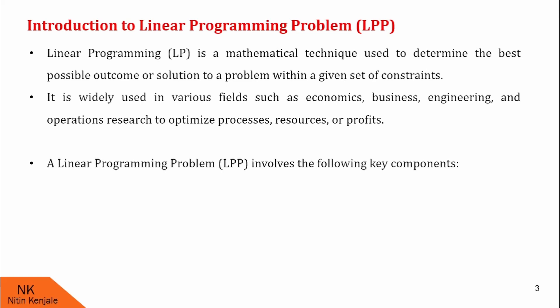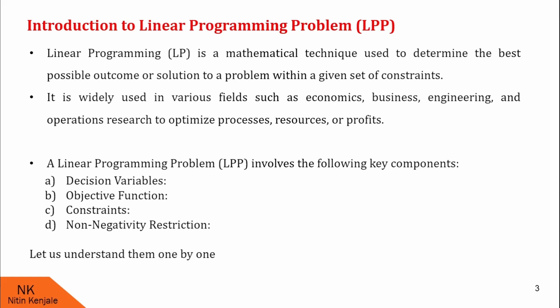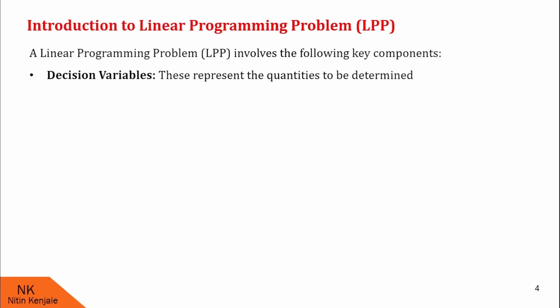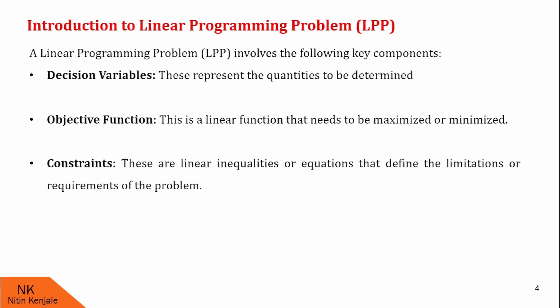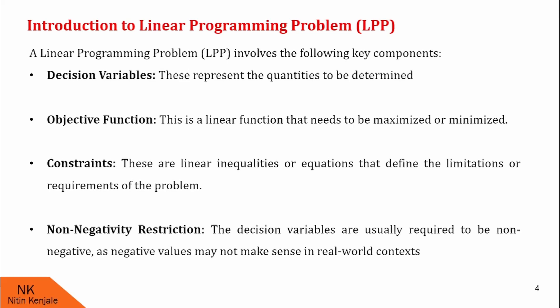A linear programming problem involves the following key components: decision variables, objective functions, constraints, and non-negative restrictions. Decision variables represent the quantities to be determined. The objective function is a linear function that needs to be maximized or minimized. Constraints are the linear inequalities or equations that define the limitations or requirements of the problem. The decision variables are usually required to be non-negative, as negative values may not make sense in real-world contexts. Therefore, there are restrictions on decision variables called non-negativity restrictions.